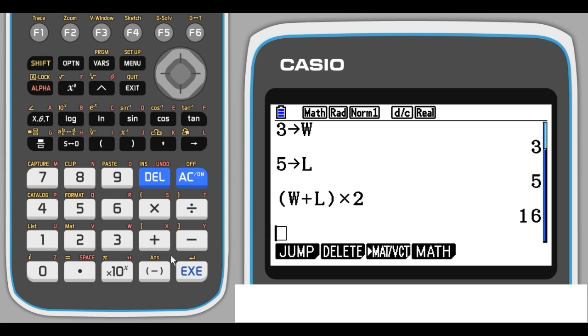Now let's say we had another rectangle we wanted to calculate, and this one's substantially larger. This has a width of 15 and a length of 23. We can scroll back up to the line where we put 3 in as the width. Now we want to change the width to 15.